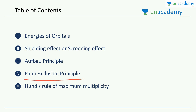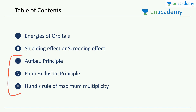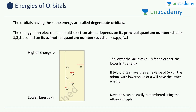Next, we'll study the Pauli exclusion principle, and we'll finish off with Hund's rule of maximum multiplicity. These three rules are very important, so please pay attention. Let's begin with our first topic: the energies of orbitals.